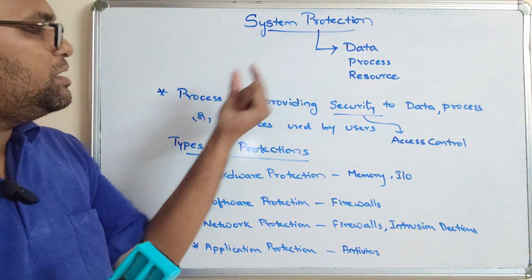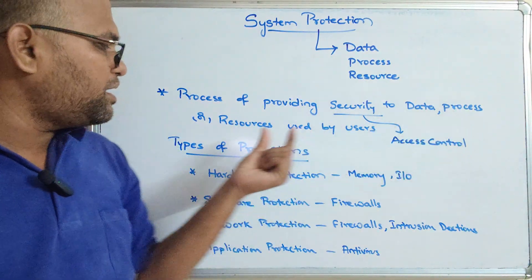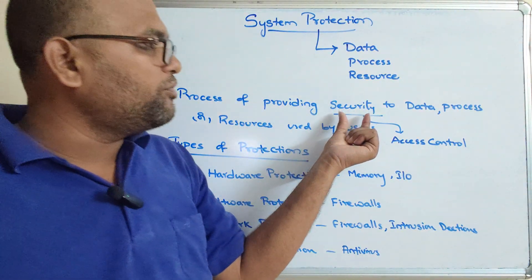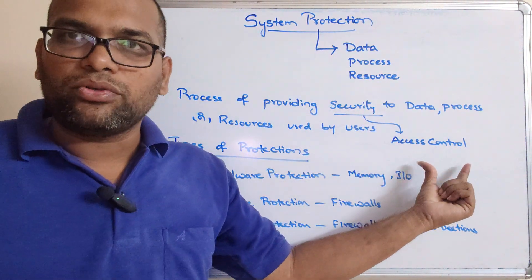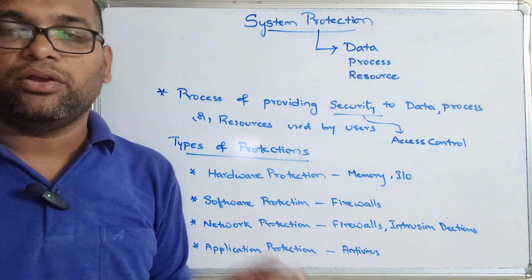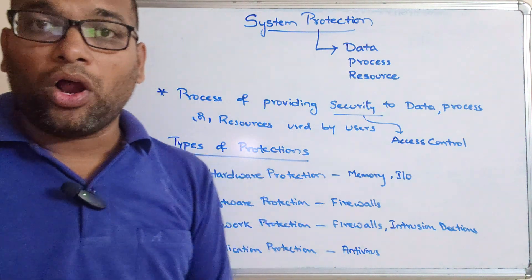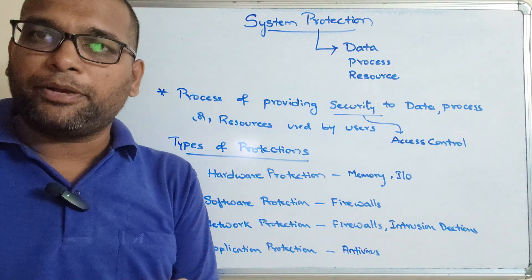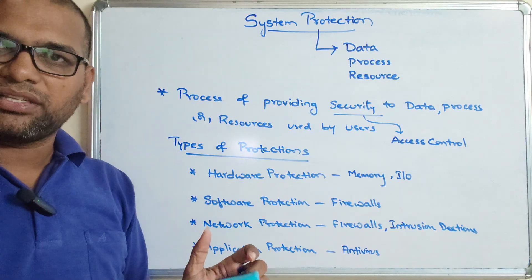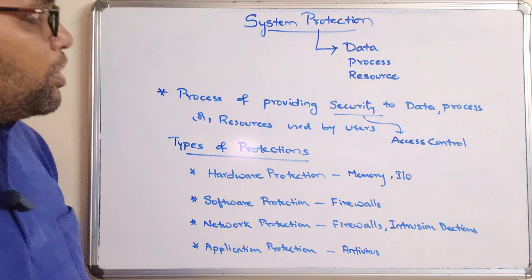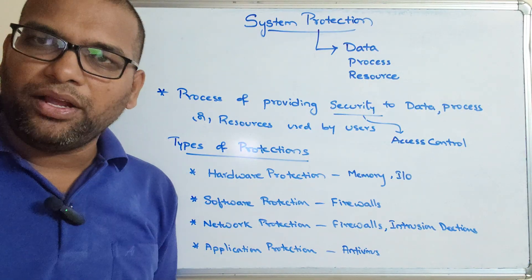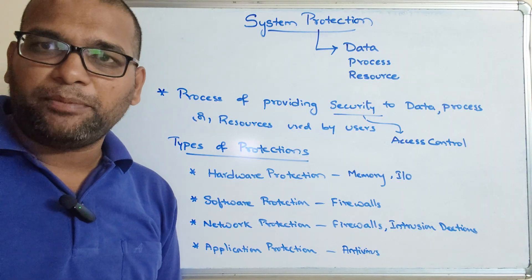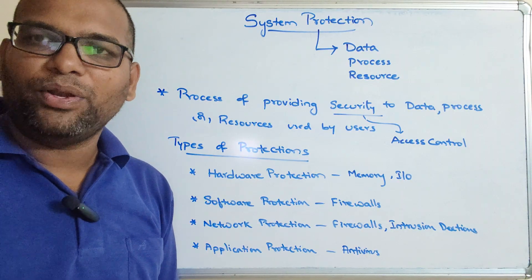System protection is a process of providing security to data, processes, or resources used by users. Security here means access control — defining who will be accessing the files and what privileges are given to users, since not every file should be shared among all users; access permissions for data and resources are most important. Hope you understood system protection. If you enjoyed the session, like and share it with your friends, and don't forget to subscribe to our channel. Thanks for watching.